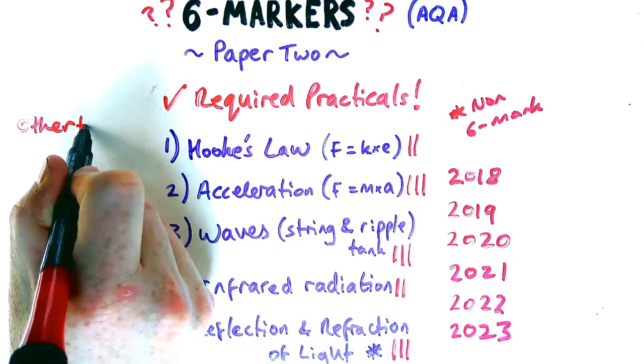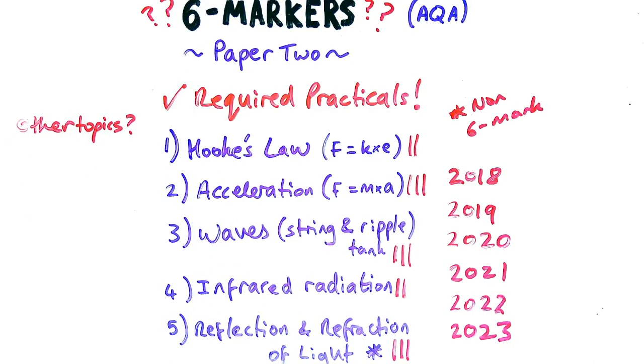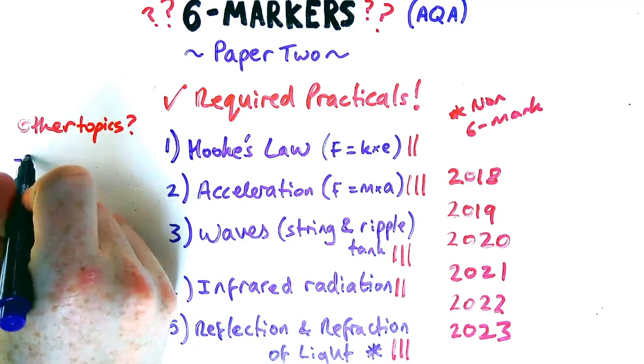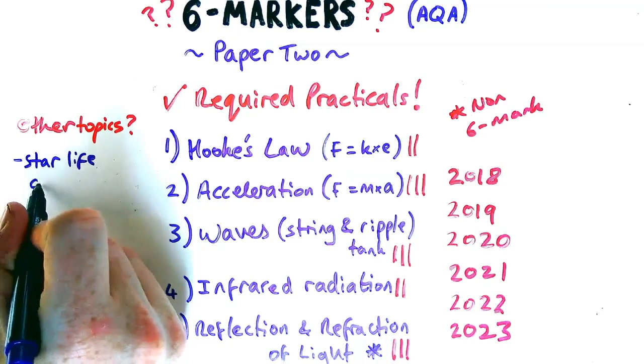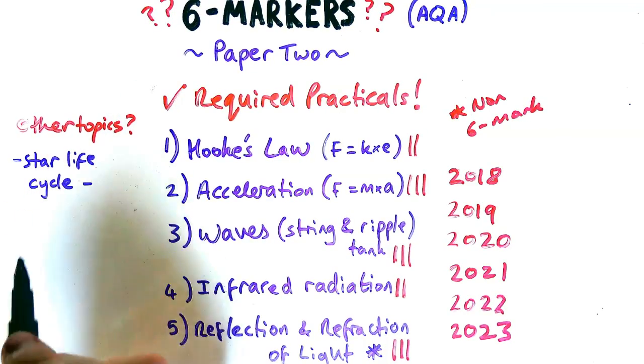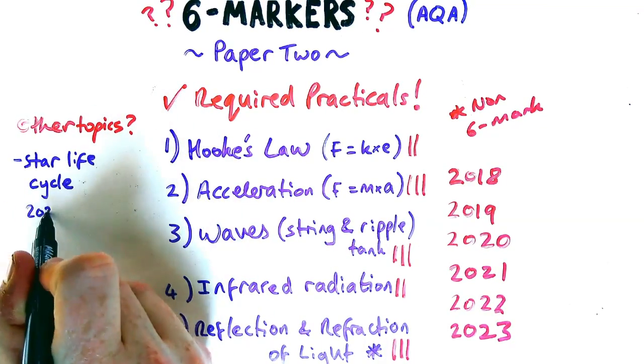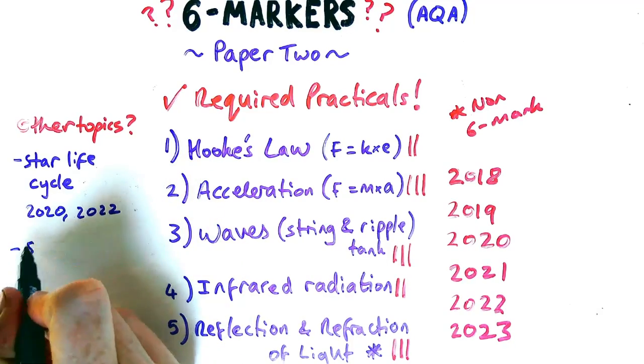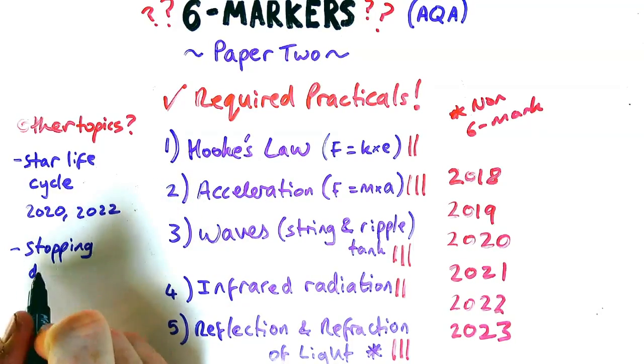Now, what other questions could you get with a six mark tariff? You could get ones about stars if you do separate science. This has come up a couple of times in previous years. So star life cycle for this specification came up in 2020 and 2022 as a six marker.